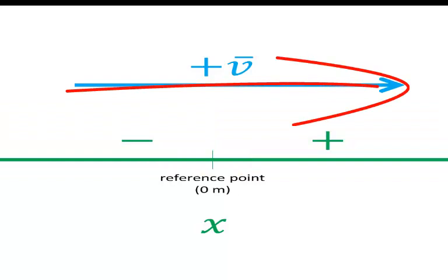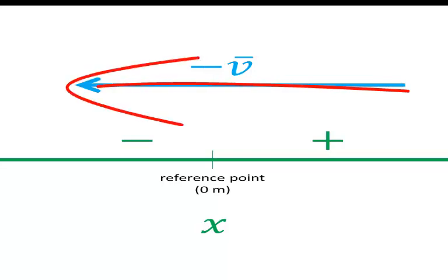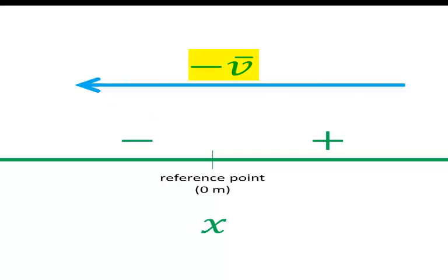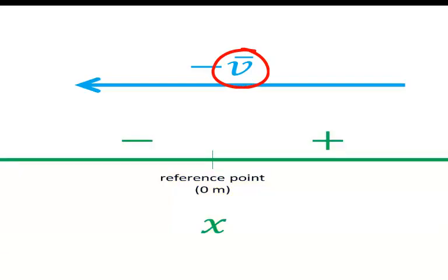So when something is moving towards the right, then we say the velocity is positive. When it's moving towards the left, we say the velocity is negative. It doesn't matter on which side of the reference point the object is. That determines whether the position is positive or negative, but it has nothing to do with the velocity being positive or negative. The velocity sign just means which way it's heading, wherever it is.